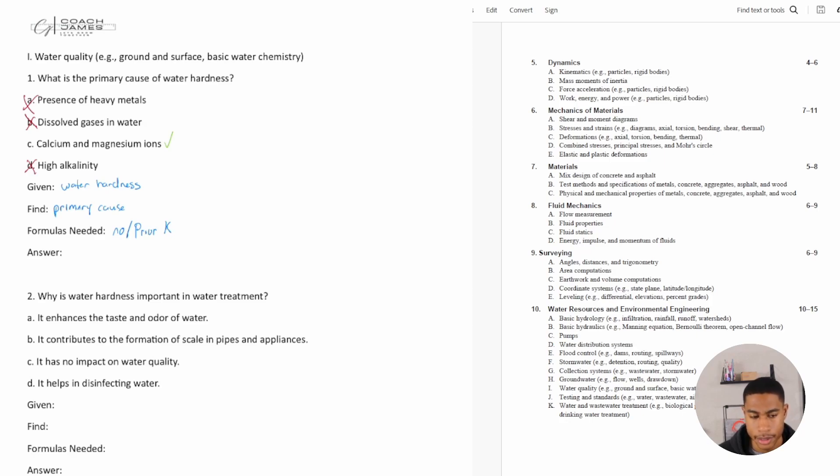Okay. So water also can be classified as soft, moderately hard, hard, or very hard based on the amount of these calcium and magnesium ions that are in the water. Okay. So just a little background for you. So our answer is C.